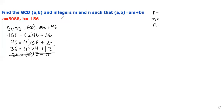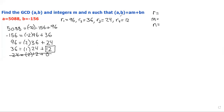Now we have all of our remainders. R sub 1 is equal to 96, R sub 2 is equal to 36, R sub 3 is equal to 24, and R sub 4 is equal to 12. So 12 is very important — that is our GCD. We've already found one answer to this question. Now let's move on to finding our M and N values.